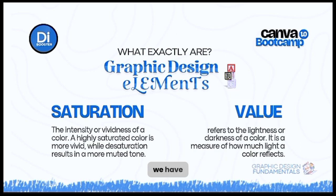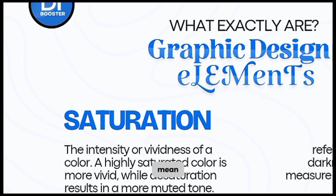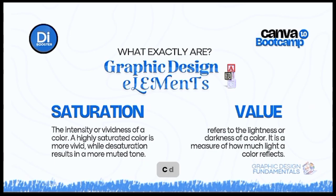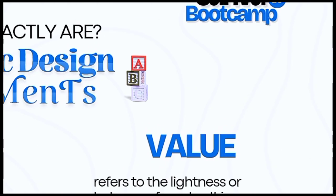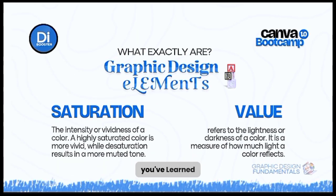Saturation increases the intensity of a color — like concentrated acid versus dilute acid. When you reduce saturation to zero, the color turns to black and white. Value refers to adding light or darkness to a color. In Canva, increasing brightness adds more light; reducing brightness darkens the color. That's what value means.